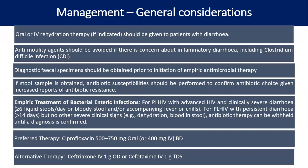Management is oral or IV rehydration therapy with sustained rehydration. Anti-motility drugs are not indicated. Fecal specimens should be obtained prior to empiric antimicrobial therapy, and antibiotic susceptibility should be performed given increased reports of antibiotic resistance. Empiric treatment is usually for advanced HIV disease with clinically severe diarrhea — more than six stools per day. For PLHIV with persistent diarrhea (more than 14 days) but no other severe clinical signs, we can wait for confirmatory diagnosis. Preferred empiric regimen: ciprofloxacin 500–750 mg orally or 400 mg IV twice daily; alternatives are ceftriaxone 1g OD or cefotaxime 1g TDS.